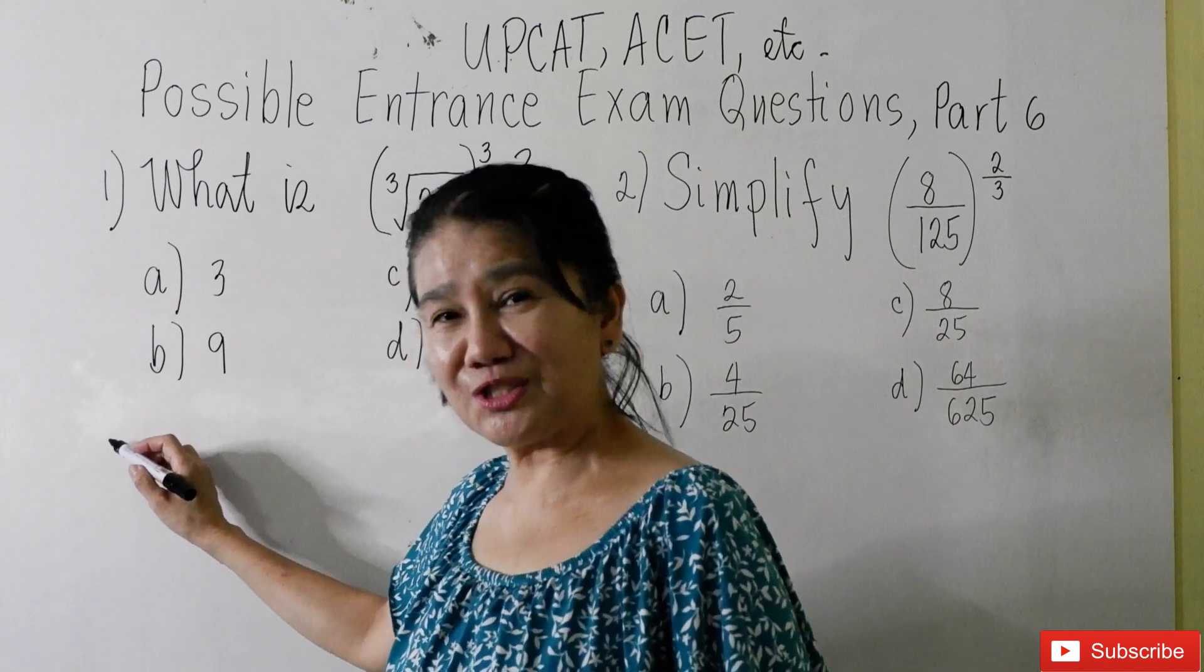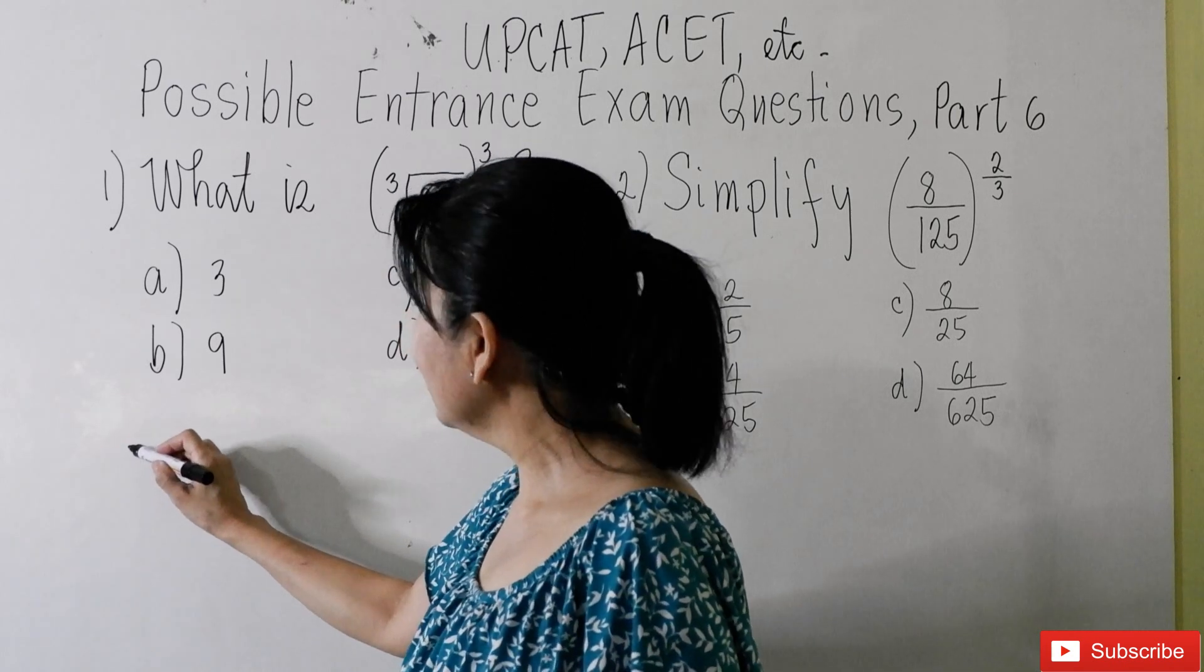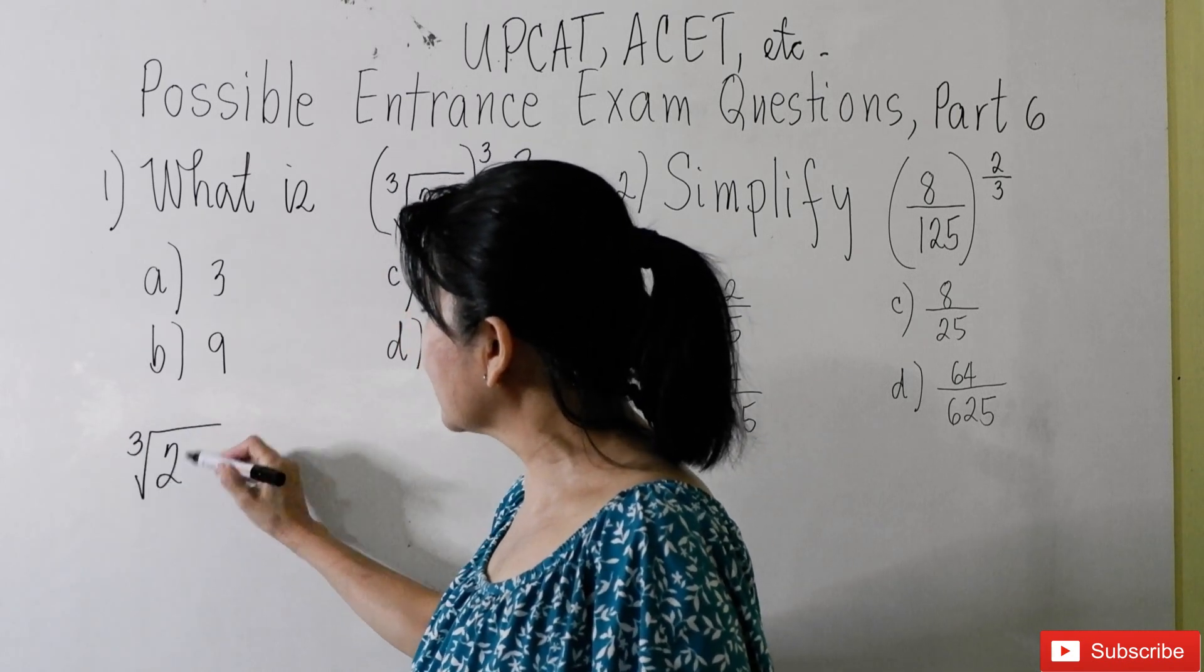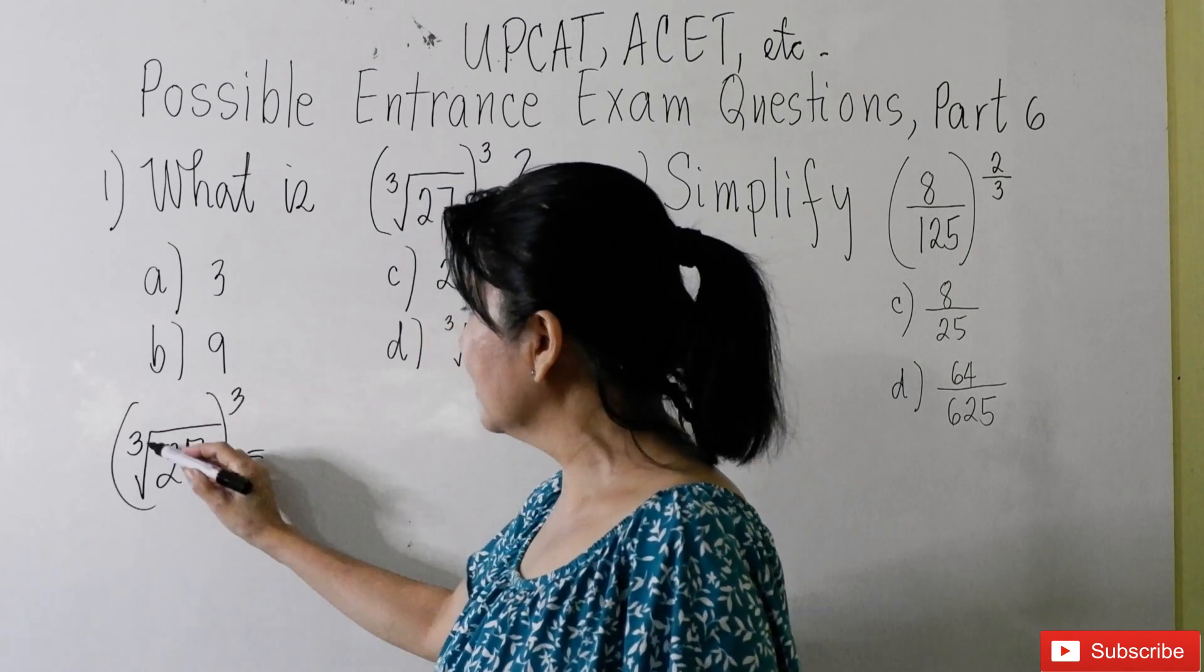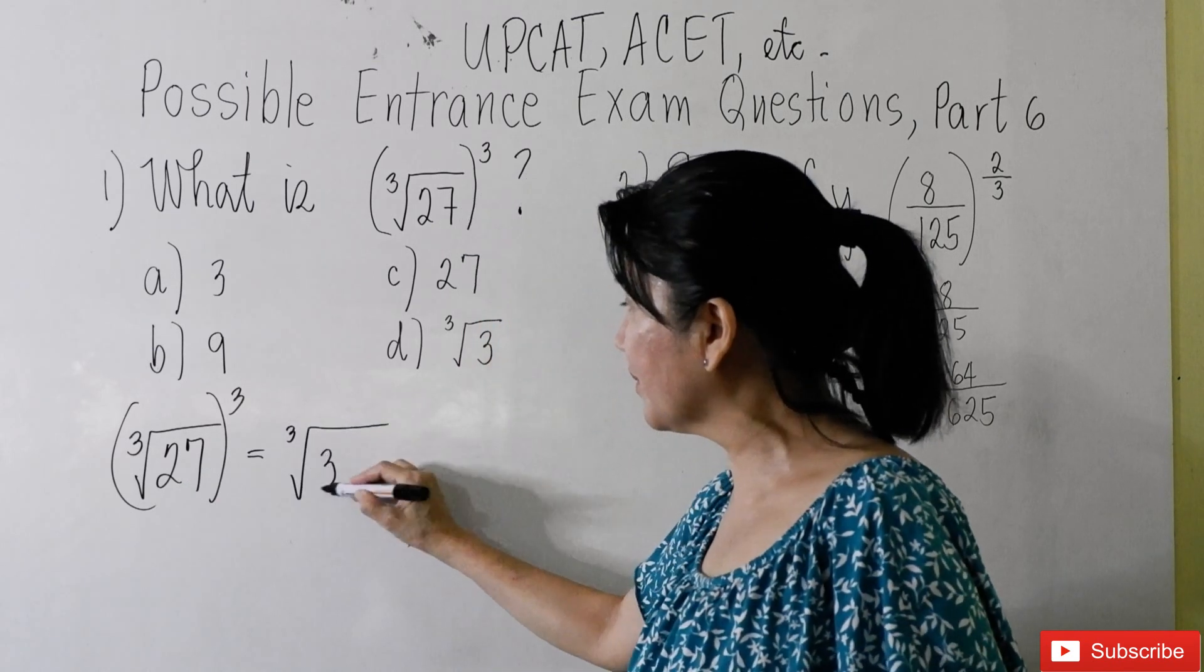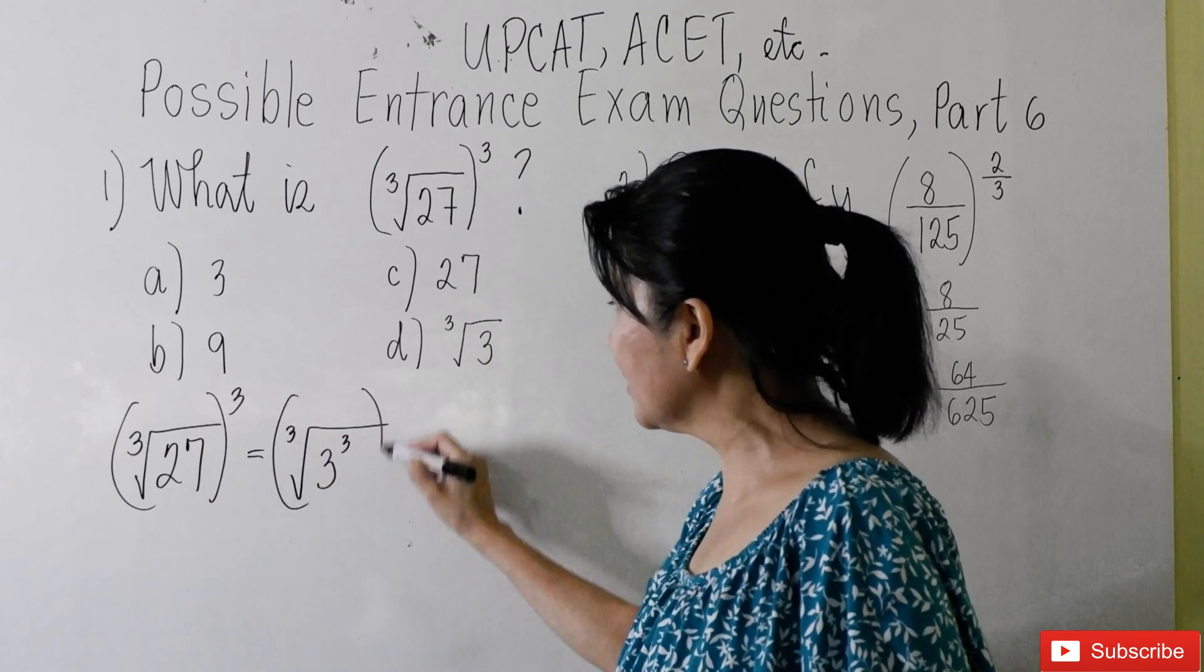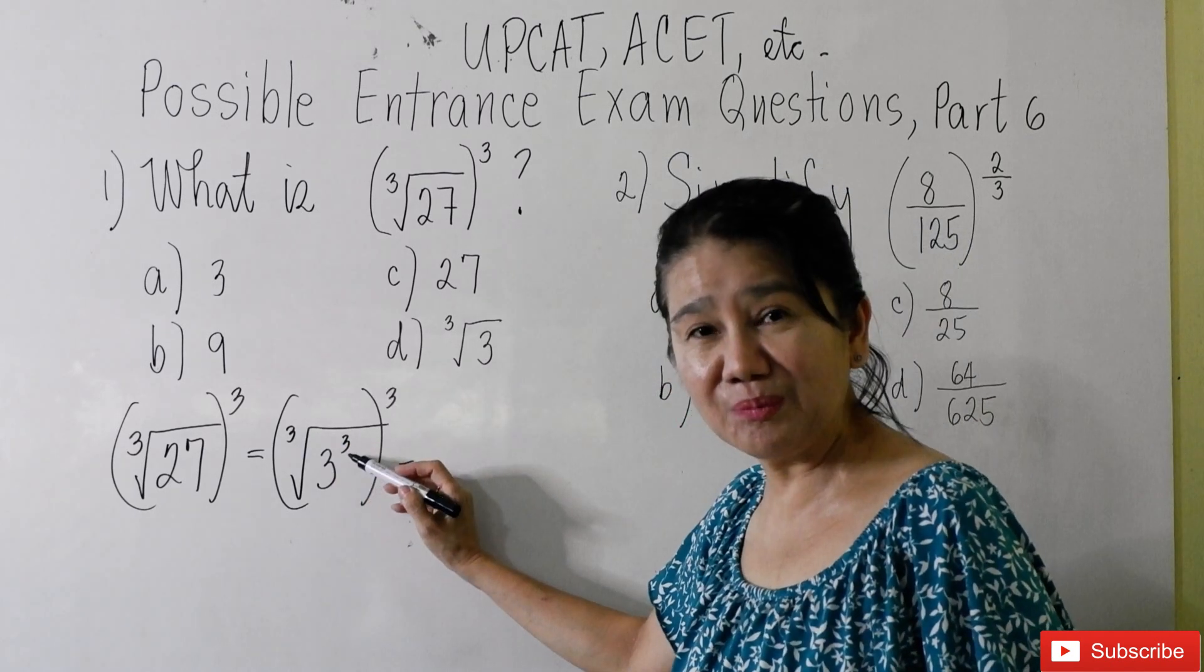Okay, let me show you the solution first before I give you the answer. First, if you write cube root of 27 raised to the third power, you can see that the cube root of 27 can be written as the cube root of 3 cubed raised to the third power.